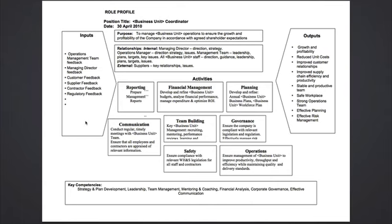Once I've got all the activities, I do a cross-check: will those activities deliver the purpose, and will they deliver the outputs we're looking for? I go through each output and make sure there's at least one activity — often more than one — that will deliver it. Once I'm happy with that, I define the inputs required for this person to do the job effectively — what do they need to funnel through those activities to give you those outputs?